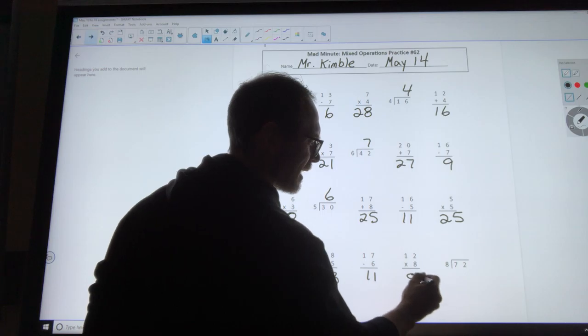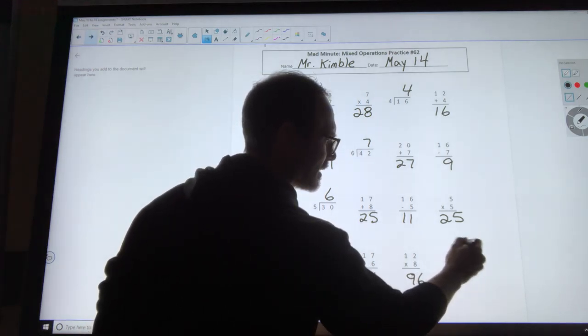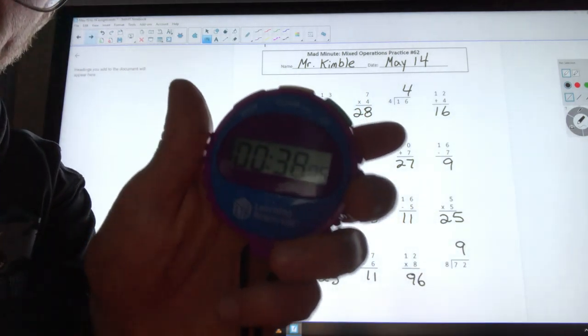12 times 8 is 96. And 72 divided by 8 is 9. Stop! 38 seconds.